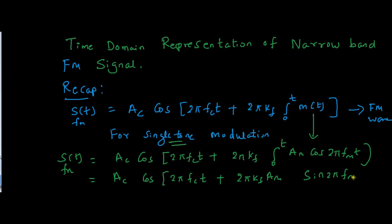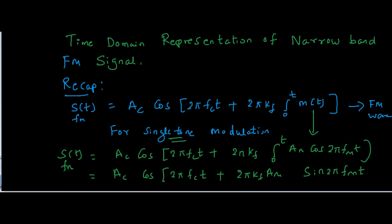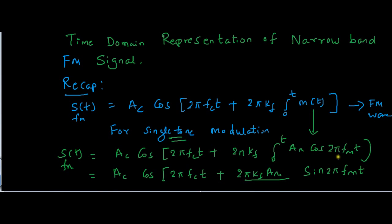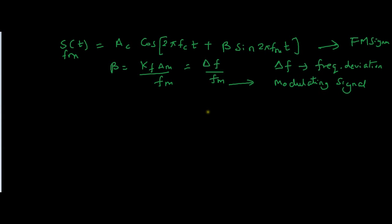After applying the limits and integrating, we divide by 2π fm. The result gives us the time domain representation of the FM signal for single tone modulation. The value kf·Am / fm is called beta (β), so s(t) = Ac cos(2π fc t + β sin(2π fm t)), where β = kf·Am / fm, which can also be represented as Δf / fm.